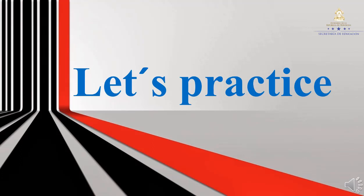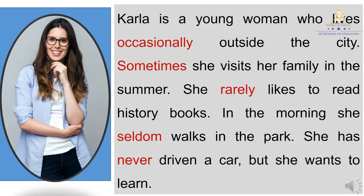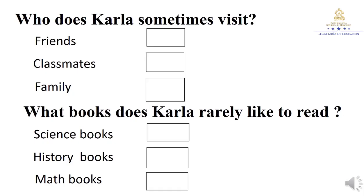This is the Let's Practice section. We will read and understand the following text about a young woman named Carla. Let's start. Carla is a young woman who lives occasionally outside the city. Sometimes she visits her family in the summer. She rarely likes to read history books. In the morning, she seldom walks in the park. She has never driven a car, but wants to learn.